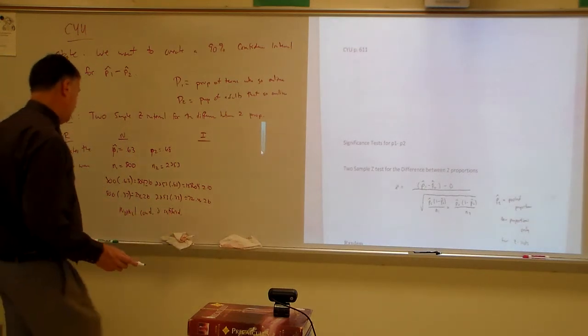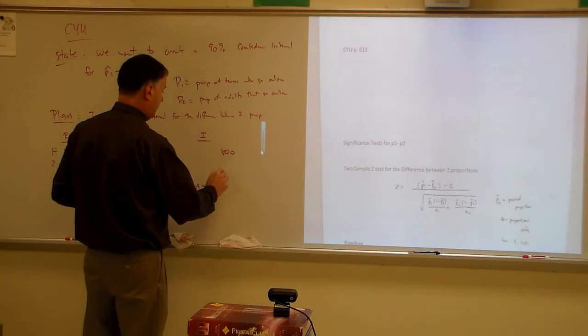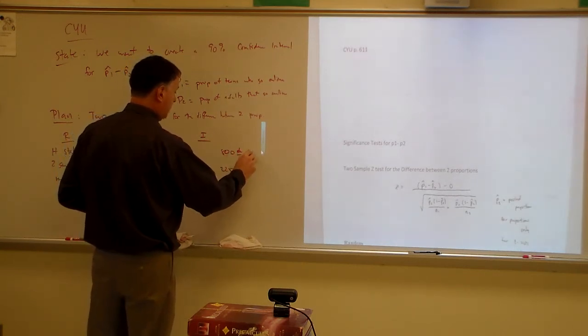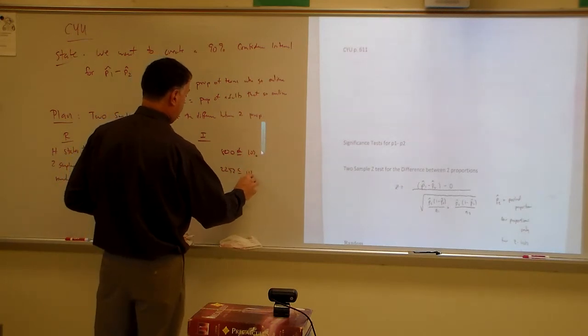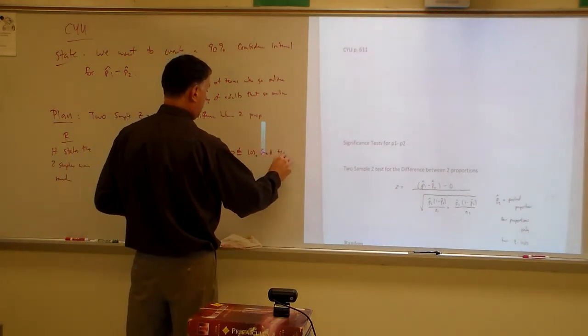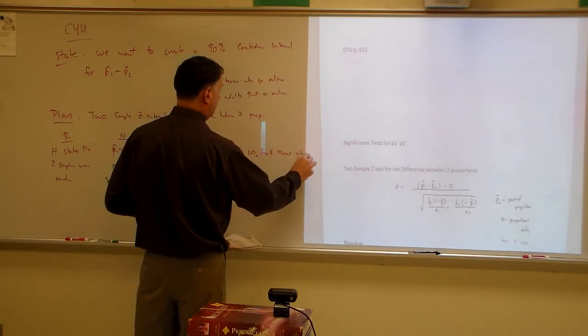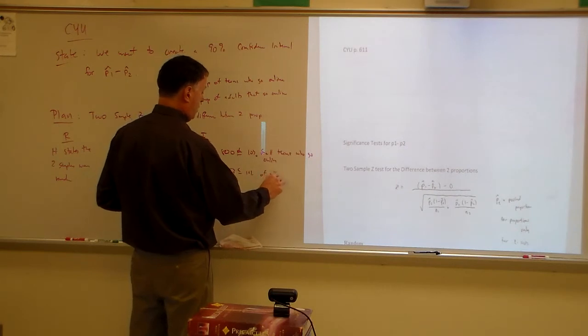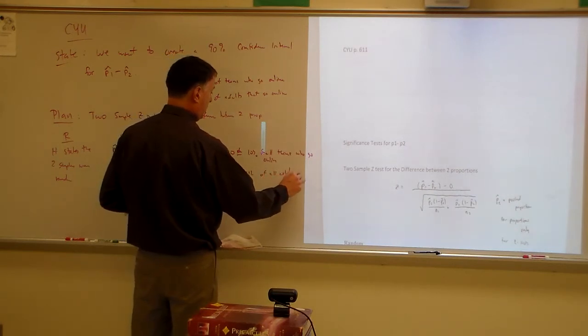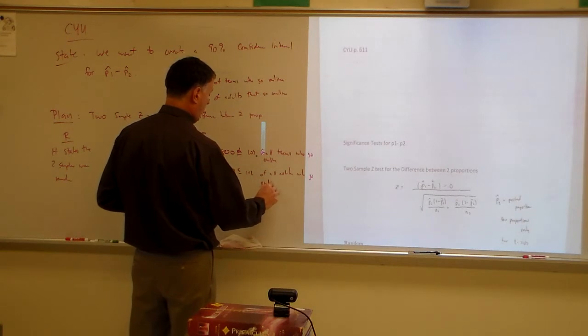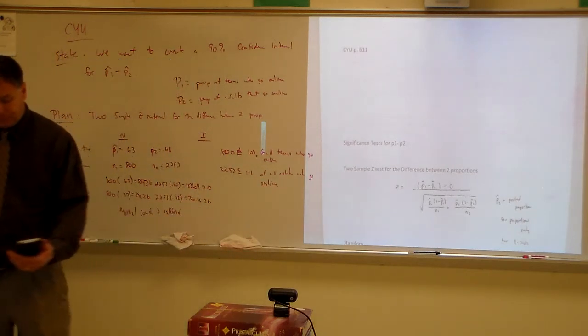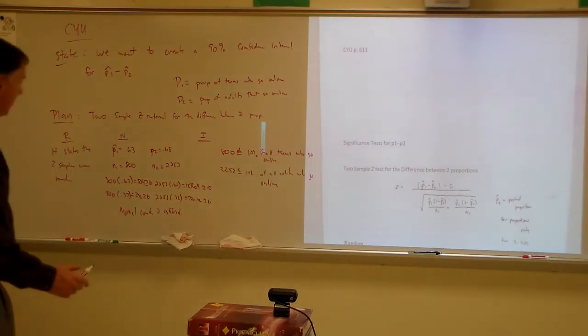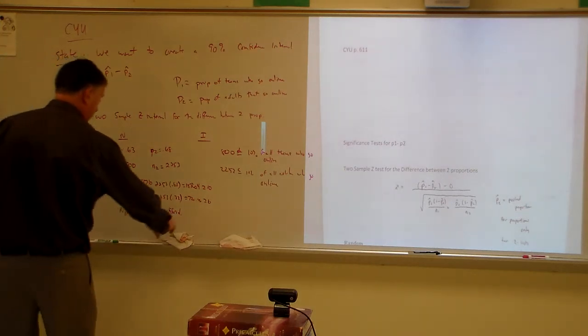800 and 2,253 are both less than or equal to 10% - 10% of all teens who go online and of all adults who go online. All right. There we go. We've got our state. We've got our plan. Let's go do our do.